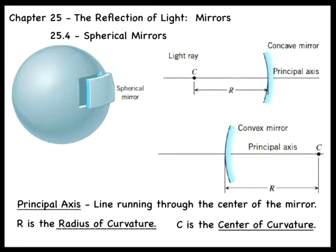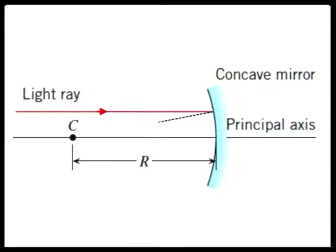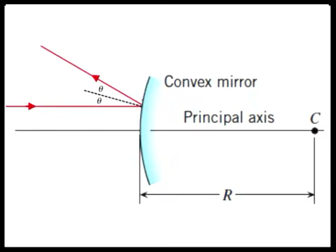Even though the surface of a spherical mirror is curved, when a light ray strikes the mirror, it still obeys the law of reflection at the surface. For a light ray striking a concave spherical mirror, we draw in the normal to the surface and show that the angle of incidence equals the angle of reflection. A concave spherical mirror therefore reflects light rays toward the principal axis. For a convex spherical mirror, the angle of incidence also equals the angle of reflection, and convex spherical mirrors reflect light rays away from the principal axis.